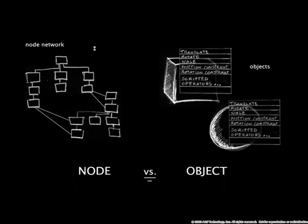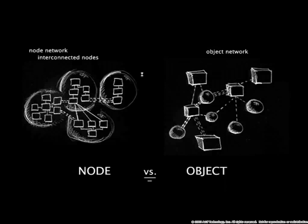In XSI, because each object has its own functionality, you don't have to create as many objects, and you can more easily interconnect them together to create your rigging mechanism. This idea between node networks versus object networks becomes more difficult to manage once you start building larger character sets or more complex characters.